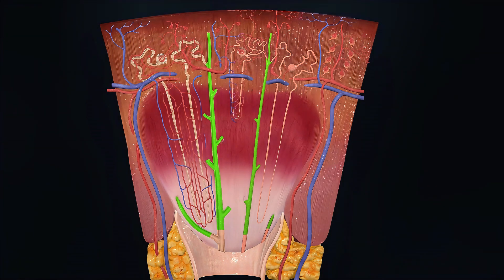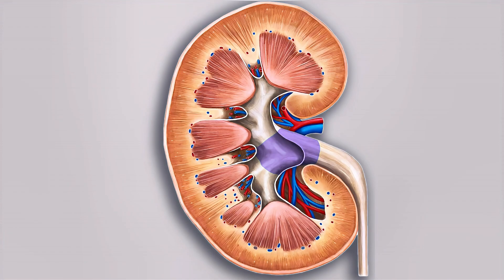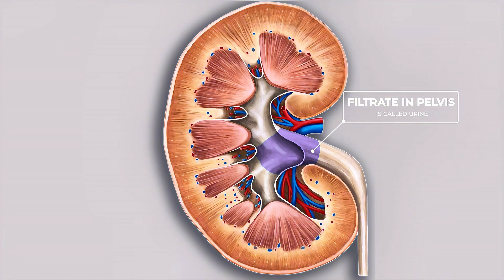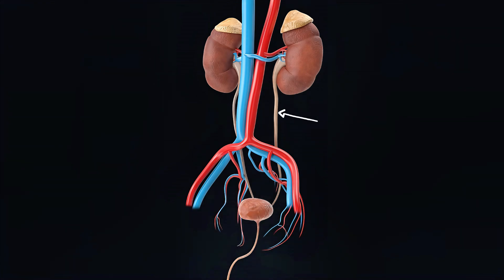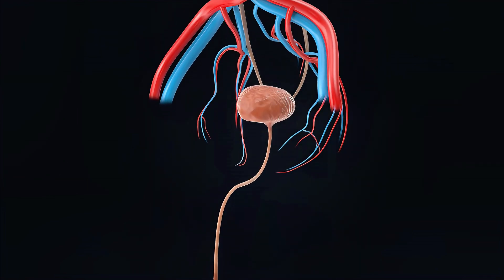However, if the body has enough water, the filtrate travels from the collecting duct to the calyx region of the kidney and then to the pelvis region. The filtrate is now called urine because no more reabsorption will occur. From the pelvis, urine moves into the ureter, then into the bladder where it is stored, and when needed, it is expelled from the body.